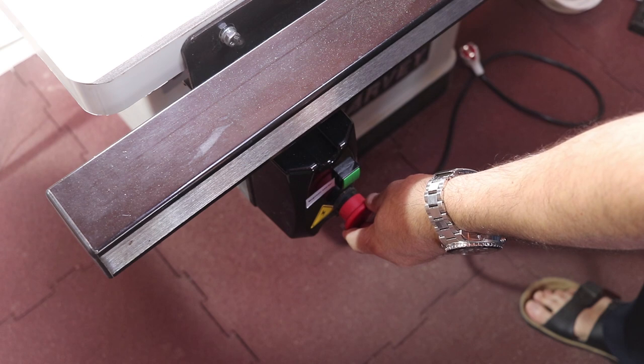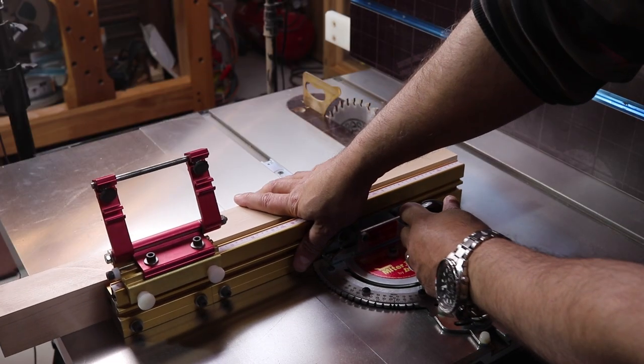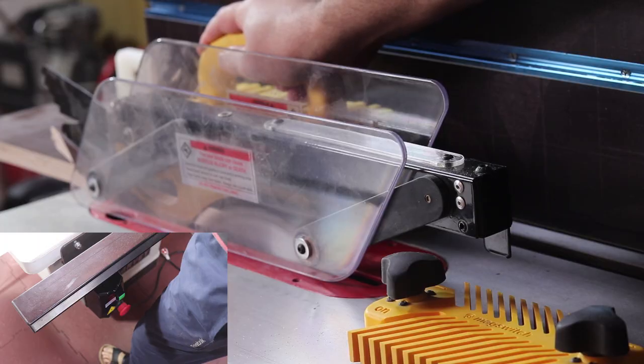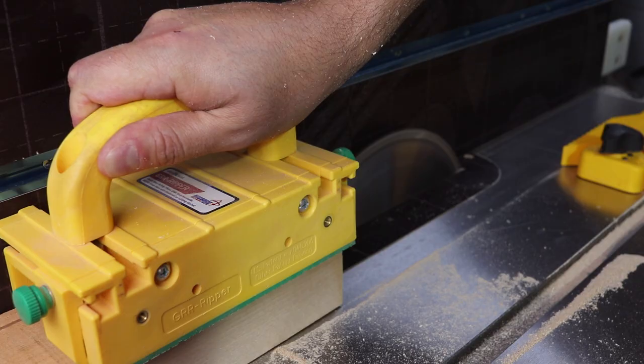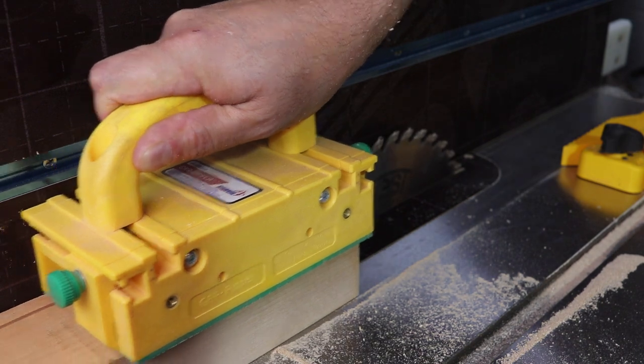You should always keep your leg nearby the stop switch when using the table saw, and the first thing you should do when finishing up a cut is to kick off this big red button, even before removing your hands off the workpiece you just finished cutting.